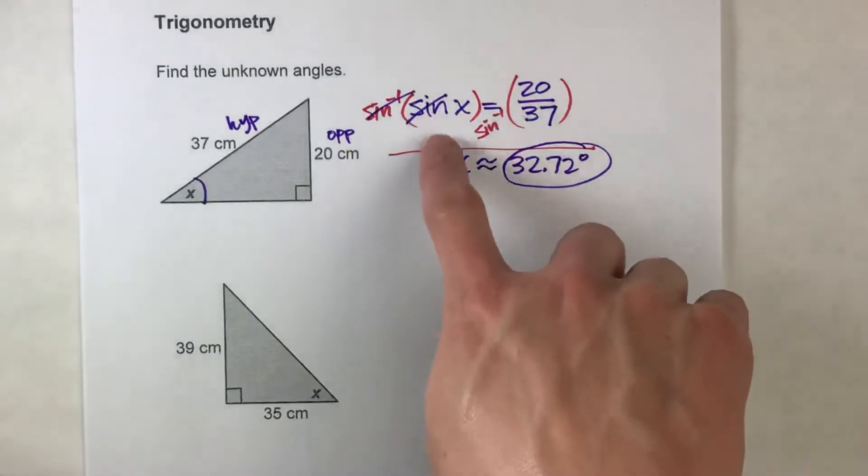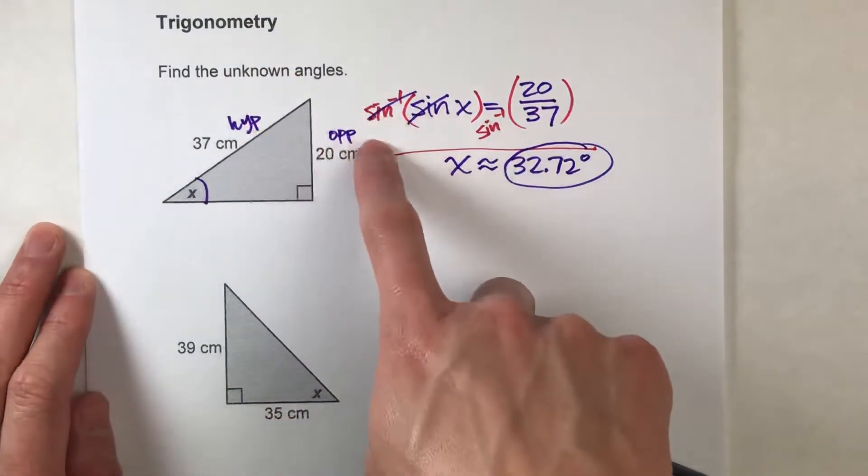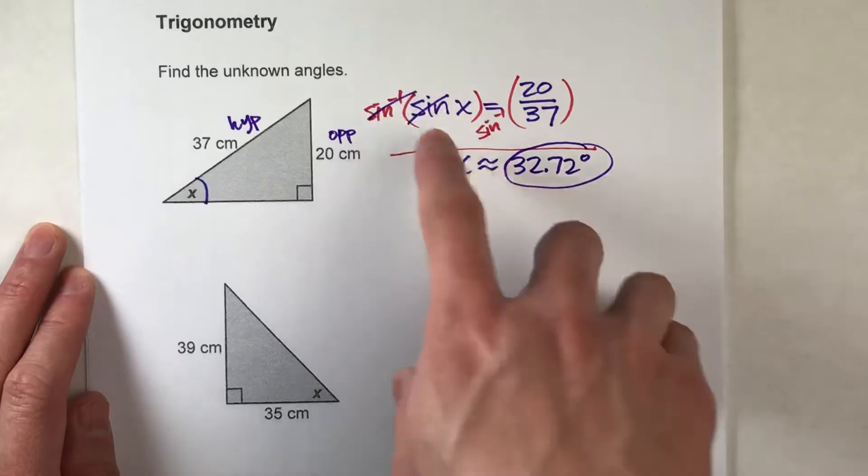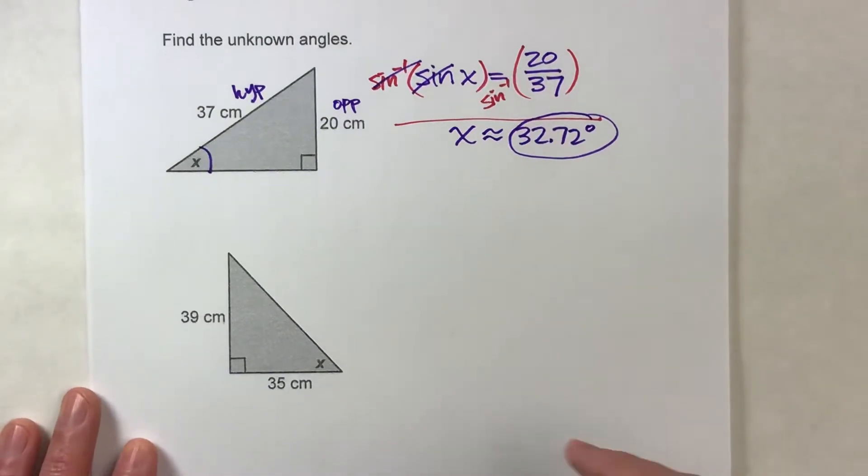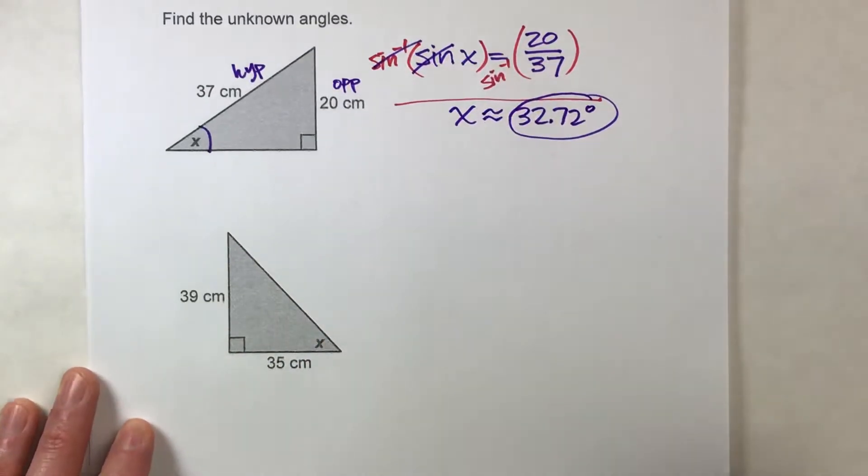So anytime you need to undo a trig ratio like sine, cosine, and tangent, we're going to use that inverse version of it. Let's do one more so you can see it again. We've got another triangle down here.